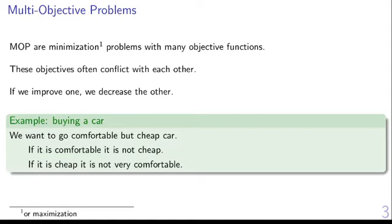One simple example of a multi-objective problem is buying a car. Let's take a closer look at this. We want comfortable cars, but comfortable cars have many conveniences and we pay for that. The comfortable cars tend to be more expensive. On the other hand, if the car is cheap, it might not have those conveniences and is likely not to be comfortable.